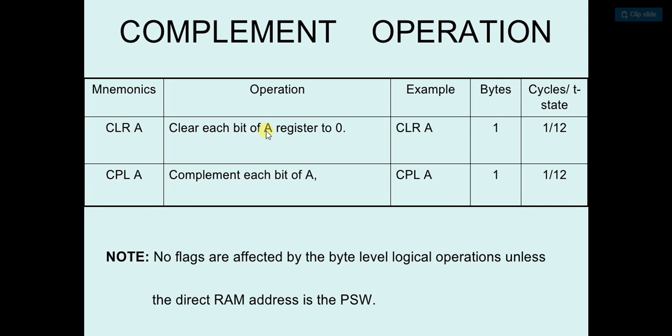It will clear each bit of a register to zero. If we put R1 here, it will clear the bits of R1 register to zero. Suppose a register consists of bits like 1010. After this operation, it will clear the one bits to zero, so the bits will be 0000. This clears all the bits of the register.